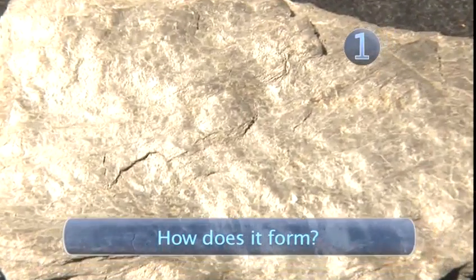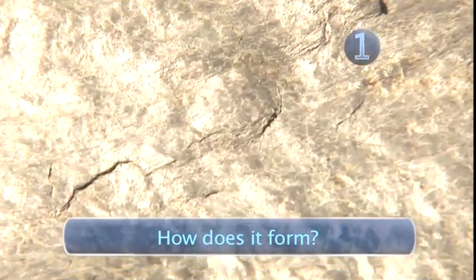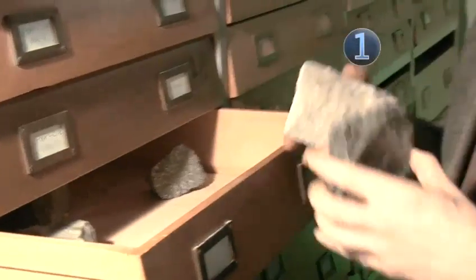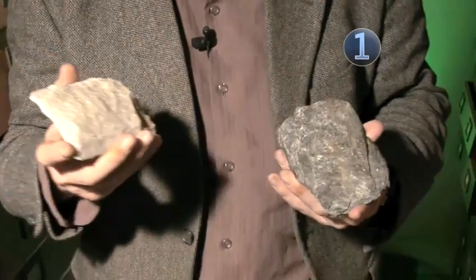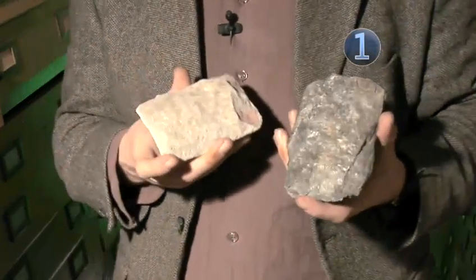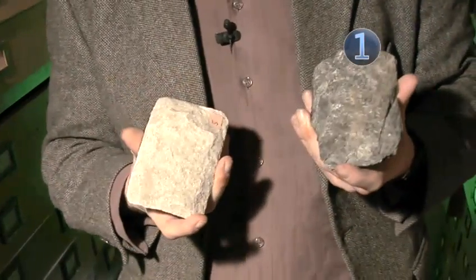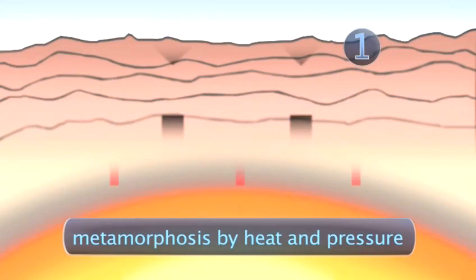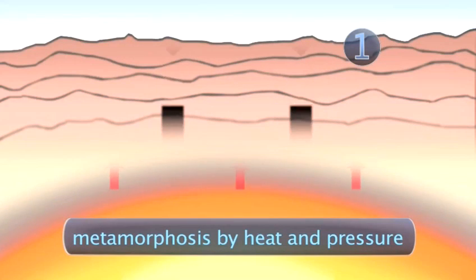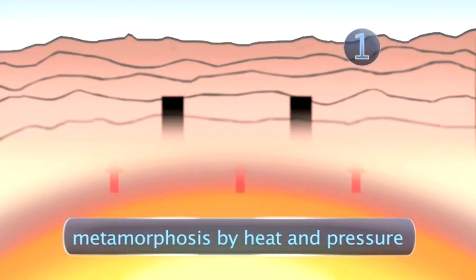Step one: how does it form? So I've got some metamorphic rocks here. Basically, metamorphic rocks started off as sedimentary or igneous rocks and then were changed by heat and pressure.